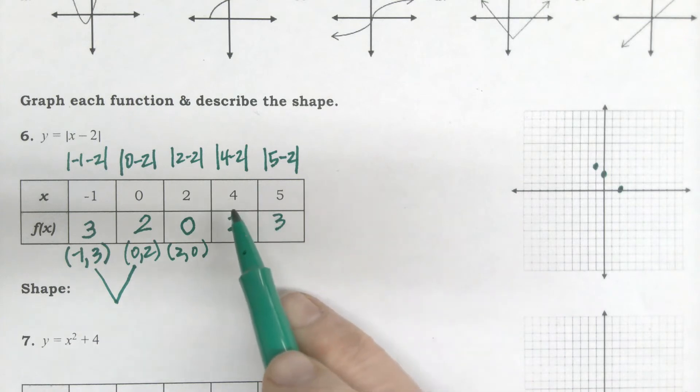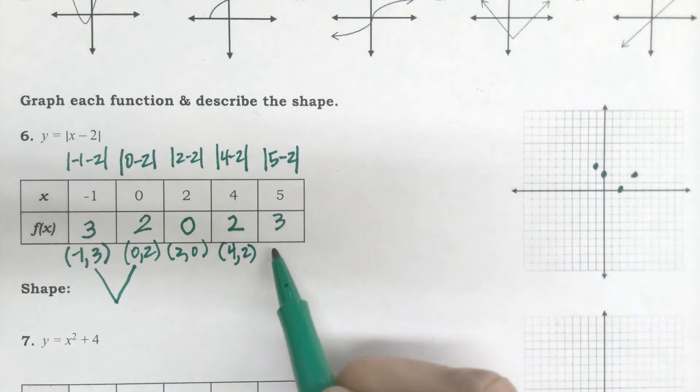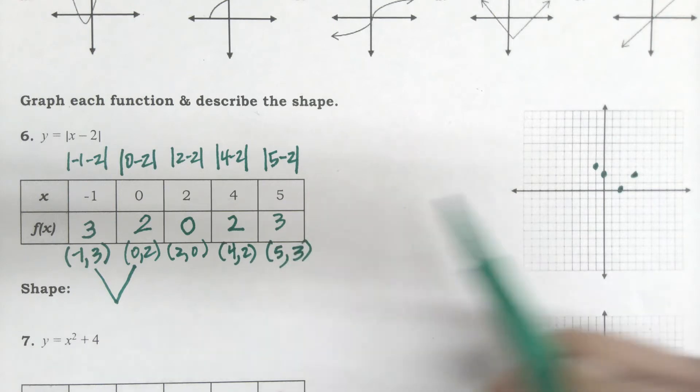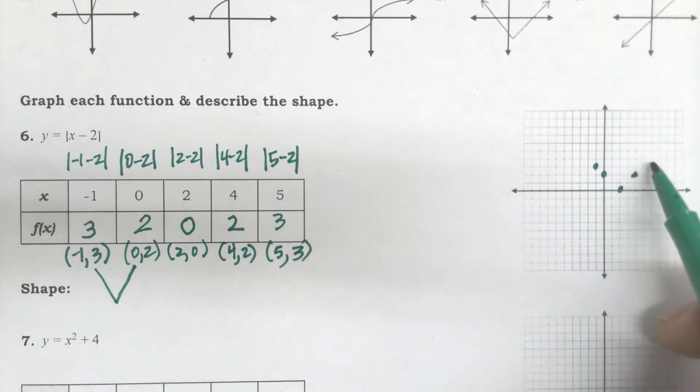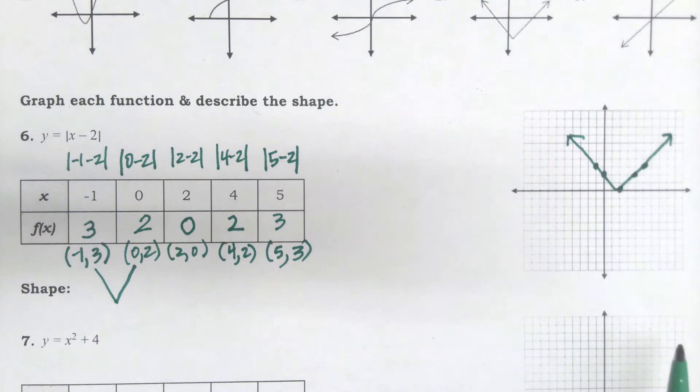Then, I have 4, 2. Right 4, up 2. And, I should see my V start to take shape. 5, 3. Right 5, up 3. And, then I'll connect my points, connect the dots, and create my shape.